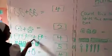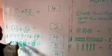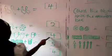1, 2, 3, 4. Plus 1 cup again. Equals to what? 4. 1, 2, 3, 4. Equals to 4.